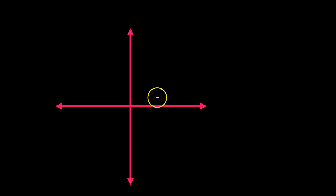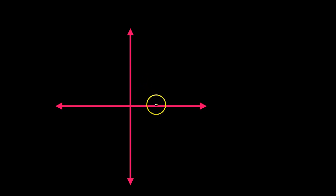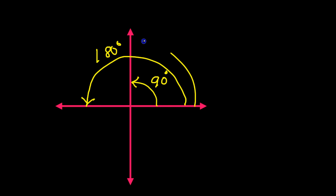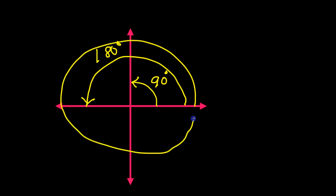We have long worked with degrees. We glance at something like this and we know that from here to here, that is 90 degrees. We know that if we go from here to here, that is 180 degrees. We know that a complete circle is 360 degrees. We know these things.